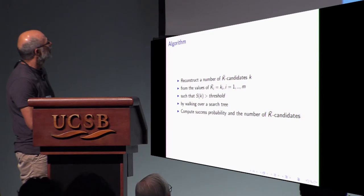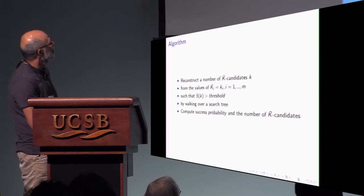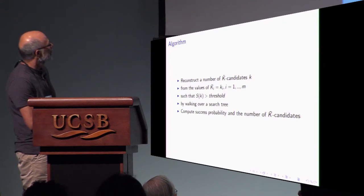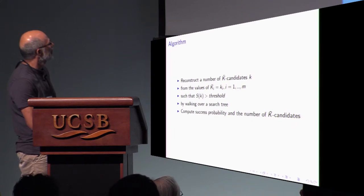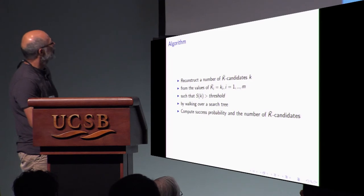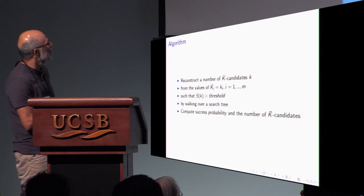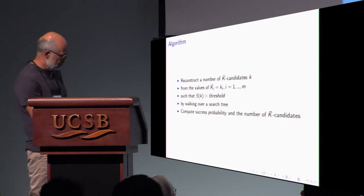And we use this fact in cryptanalysis of block cipher. So we can reconstruct the number of values of these key bits from the values of key bits which affect the projection. And this value which we want to reconstruct should satisfy this condition, where s is the statistic reconstructed. This is some threshold. And we devised an algorithm by working over search tree. Because we know distribution of this statistic, we can compute success probability as a number of key candidates in the end to be brute forced.